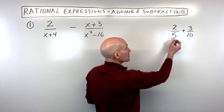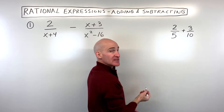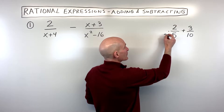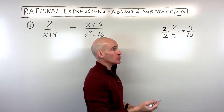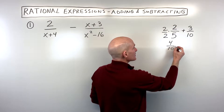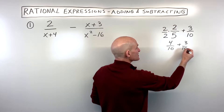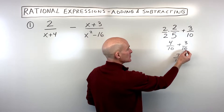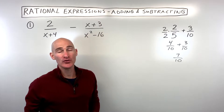For example, in this problem here, you can see that the lowest common denominator would be 10. So in order to make this fraction have a denominator of 10, I'm going to multiply the numerator and denominator by 2. This gives us 4 tenths plus 3 tenths is equal to 7 tenths. So you keep that same denominator and you're just adding or subtracting the numerators.